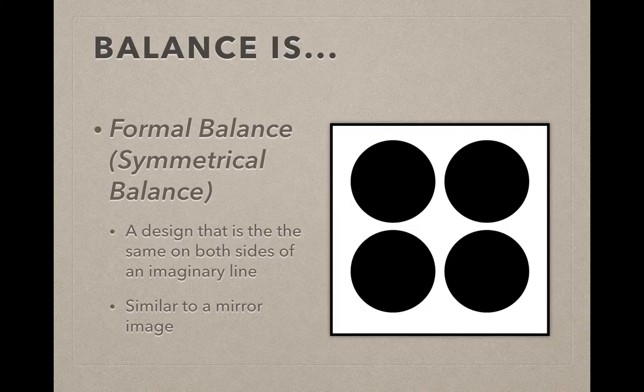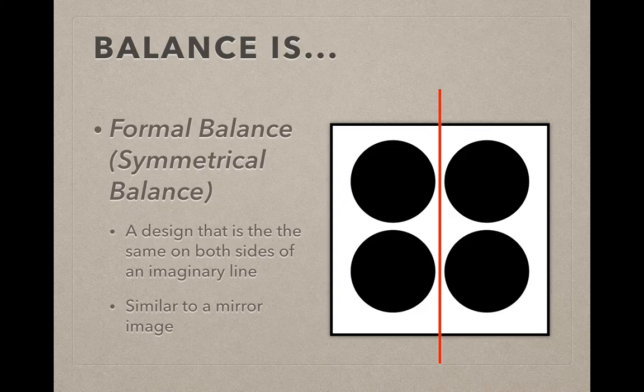In the example you see here, I have the exact same objects on either side of that center line. Mirror image would be similar to triangles where the points are pointed in towards that red line. Either way, it has a formal balance. I can fold it in half and I have the same thing on both sides.